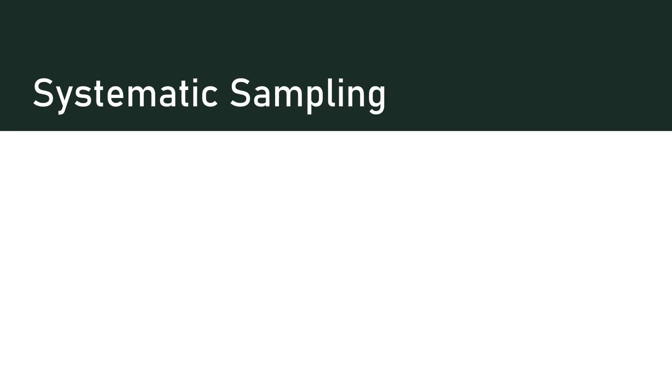Our next type of sampling is called systematic sampling. This technique involves making a list of your observations, then selecting every nth individual. If I have a list of a million people, maybe I want to choose every 13th or every 5th person. The value of n is determined by dividing the population size by the sample size needed to make our statistical tests have sufficient power.